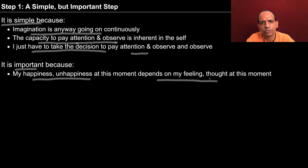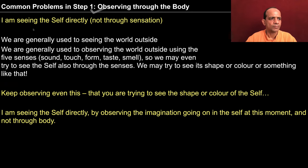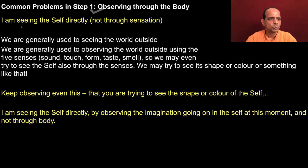Since all your happiness or unhappiness is there in your imagination and your basic aspiration is to be happy in continuity, you can see how important it is to be aware of your thought, your feeling, your imagination. Now we'll look at some common problems people have reported while observing the imagination. One kind of problem is that you start observing through the body, but as stated, there is no need of the body while observing your imagination since you are the seer and the imagination is there in you only.